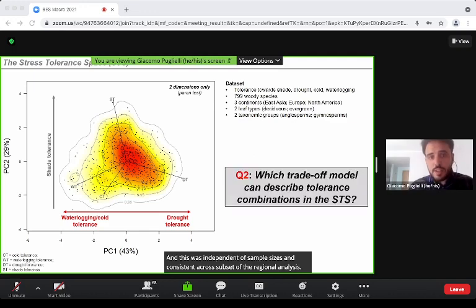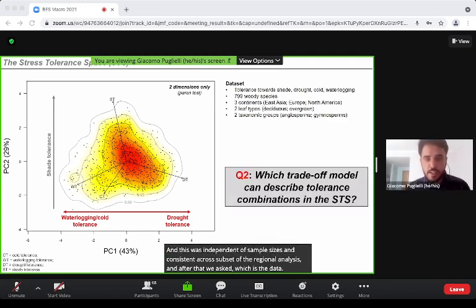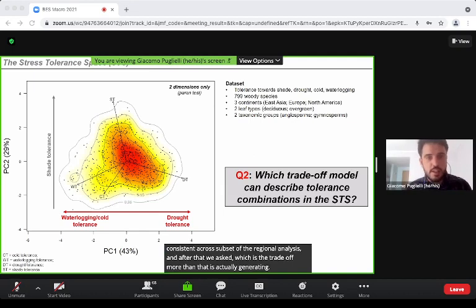After that we asked: which is the trade-off model that is actually generating the stress-tolerant combination we observed in the stress-tolerant space?